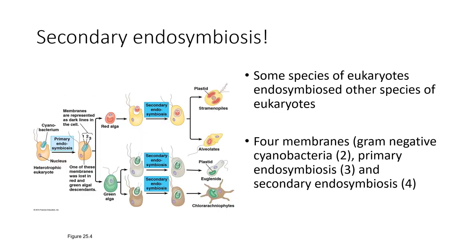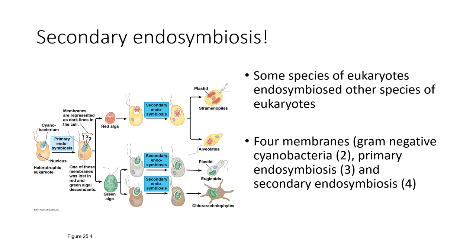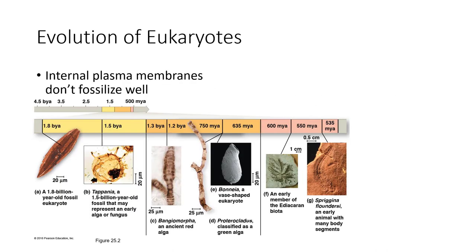If it was good enough to do once, why not do it twice? Red algae could also be taken up in something called secondary endosymbiosis. So some cells, instead of taking up a cyanobacteria, took up a green algae or a red algae. When they did this, there would be three or four membranes around the organelle. This secondary endosymbiosis may have happened multiple times, giving rise to stramenopiles, alveolates, euglenates, and chlorarachniophytes.